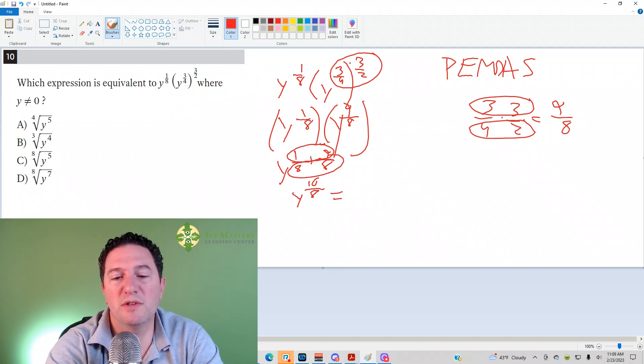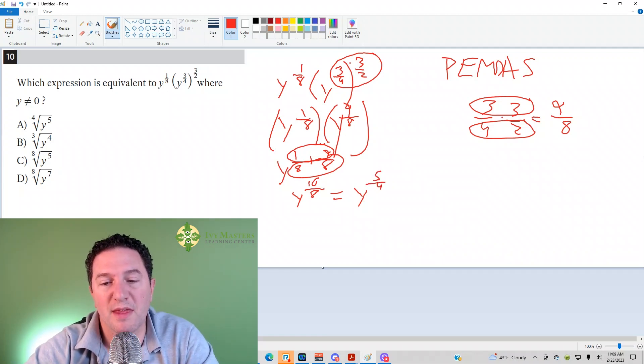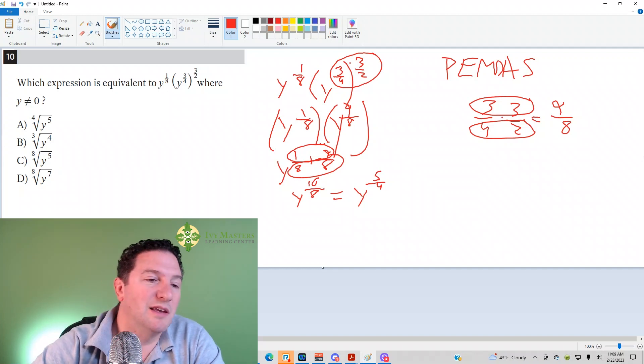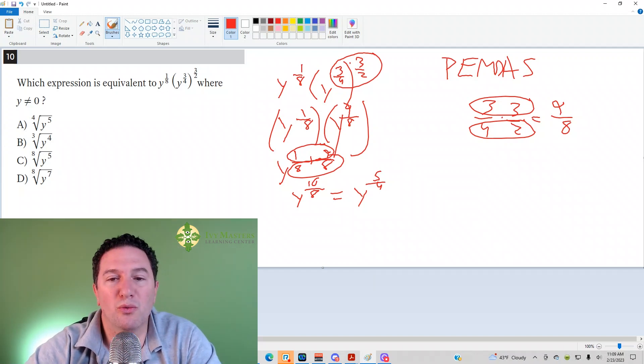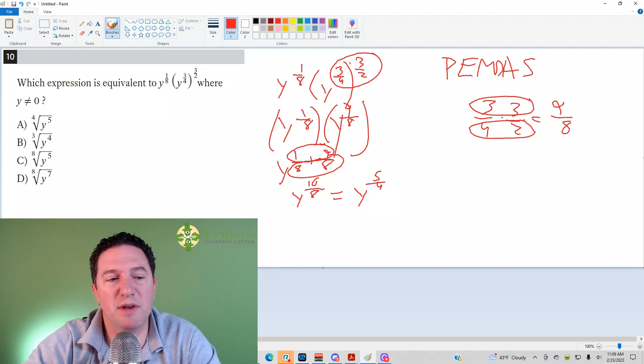So we want to reduce that fraction. 2 goes in the top 5 times, 2 goes in the bottom 4 times. So last thing, you've got to convert it to root form. So I would recommend doing this through exponential form and then converting to root form in the last step.